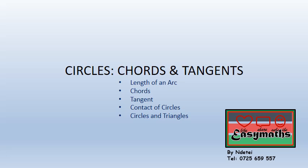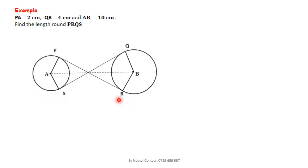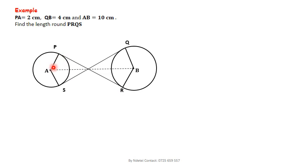So let's turn to the example now. We have a question before us wherein we're told that PA is 2 centimeters, QB is 4, and AB is 10 centimeters. And so we look for the length round PRQS: P to R, round that way, straight to S, and close back to P like that.